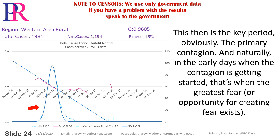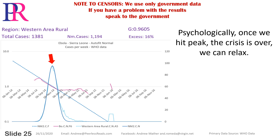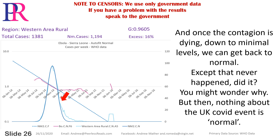This, then, is the key period, obviously — the primary contagion. And naturally, in the early days when the contagion is getting started, that's when the greatest fear, or opportunity for creating fear, exists. Psychologically, once we hit peak, the crisis is over; we can relax. And once the contagion is dying down to minimal levels, we can get back to normal. Except that never happened, did it? You might wonder why. But then, nothing about the UK COVID event is normal.